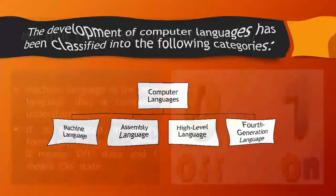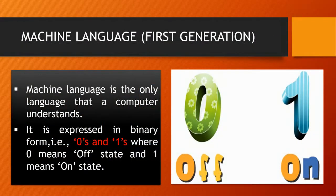Let's talk about machine language, which was used in the first generation. In those days, development was very less, so machine language was used. Machine language is the only language that the computer understands. It is expressed in binary form, that is zeros and ones, where zero means off state and one means on state. This is the computer language or binary language.